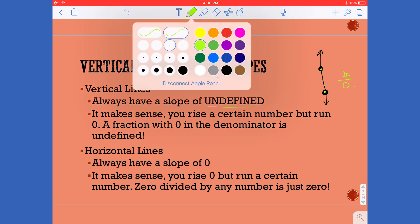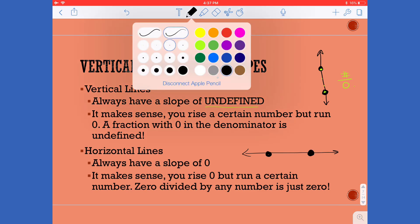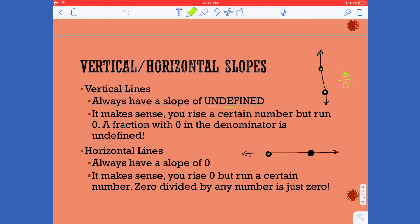However when we're working with a horizontal line and we are trying to go from one point to the other point, when I think about how much I rise to get from here to here I actually don't rise any but I do have to run and go across a certain number of values, and so since zero is in the top of my fraction the slope will always be zero, so horizontal lines always have a slope of zero.